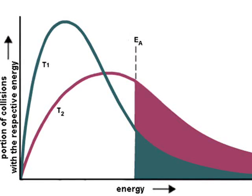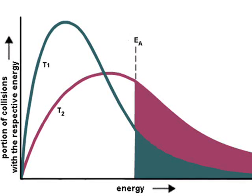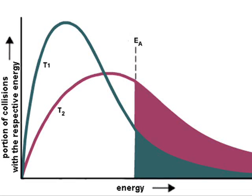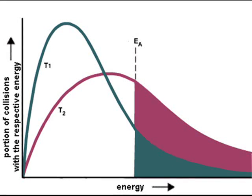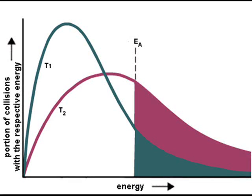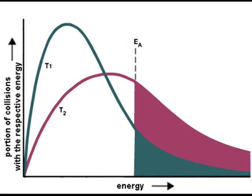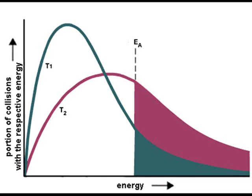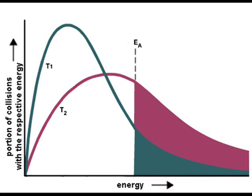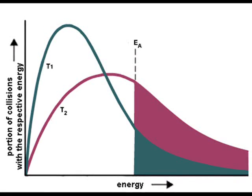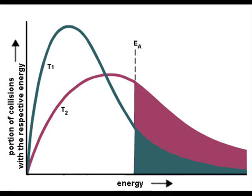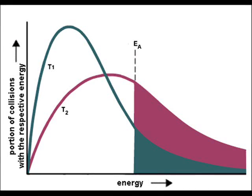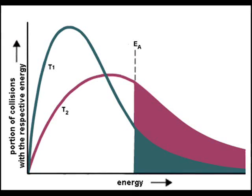Remember, the area under the graph equals the number of particles, which isn't going to change. The whole graph shifts to the right, but the peak becomes lower, as you can see in this diagram. The green curve is the normal, and the pink curve is the higher temperature. The pink and green areas combined represent the new amount of particles above the activation energy, which is much more.